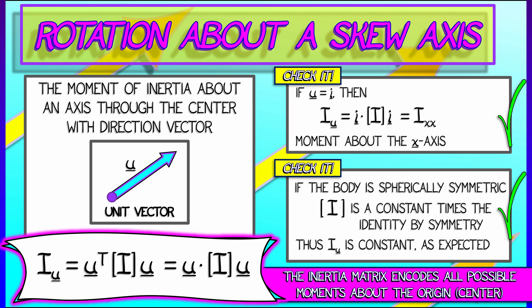What happens when we look at a non-trivial example and rotate about a skew axis?